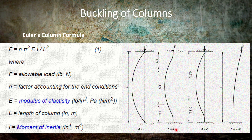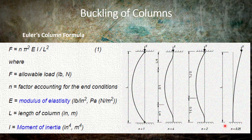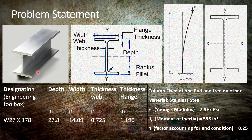In the second case, both ends are fixed supported and the value of n equals 4. In the third case, one end is fixed and the other is roller supported, so n equals 2. In the last case, where one end is fixed and the other end is free, the value of n equals 0.25.